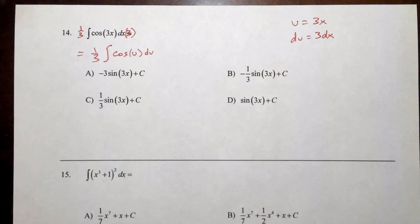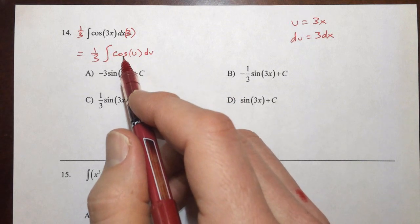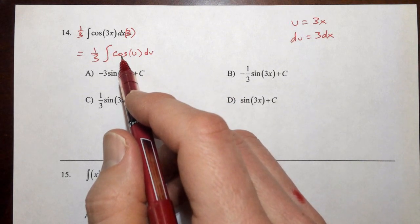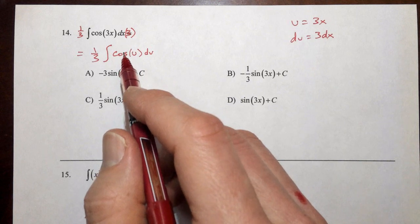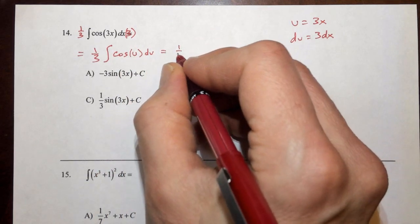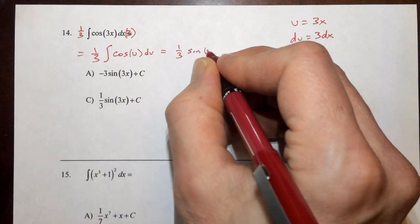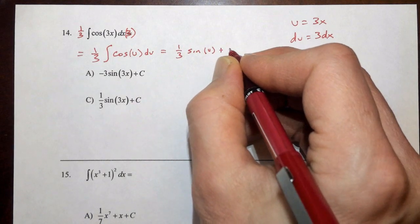We've taken a more elaborate antiderivative and turned it into a very basic one. This is one of our antiderivative rules. We know that cosine's antiderivative is sine. So we're going to have one-third sine of u plus C.